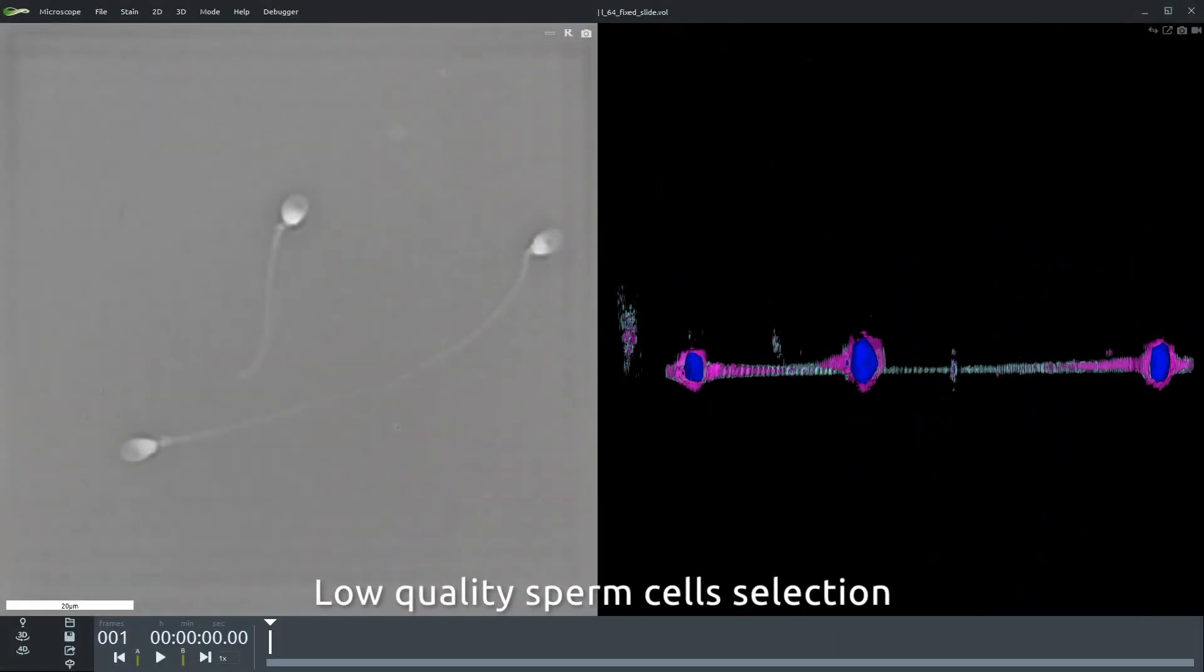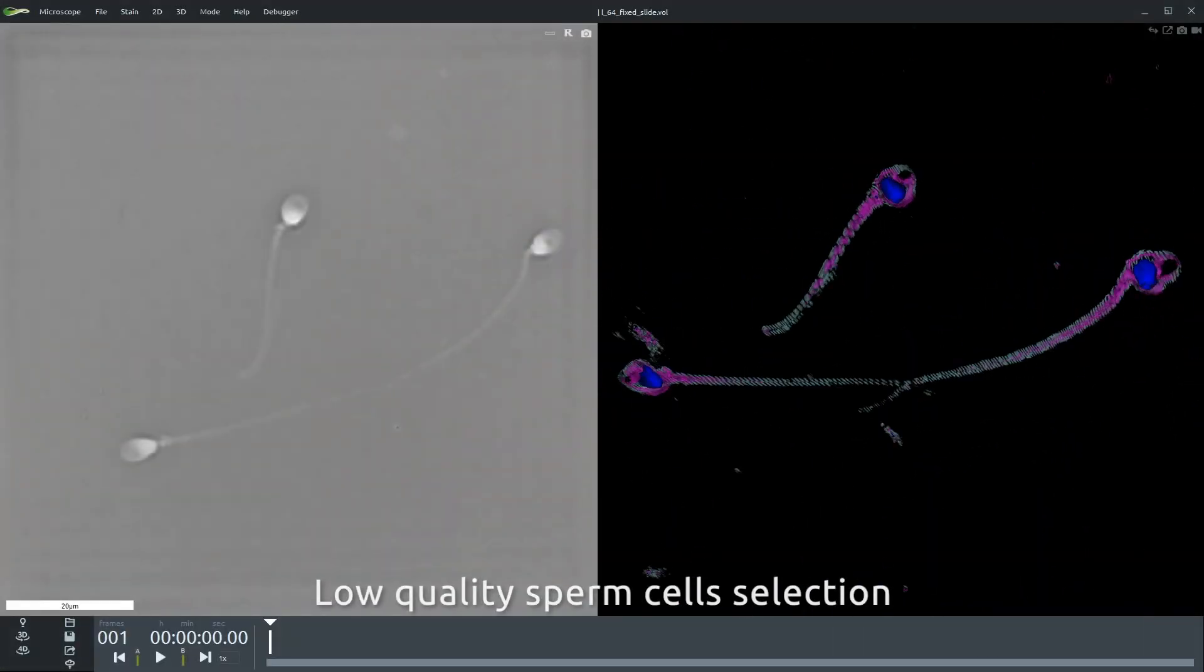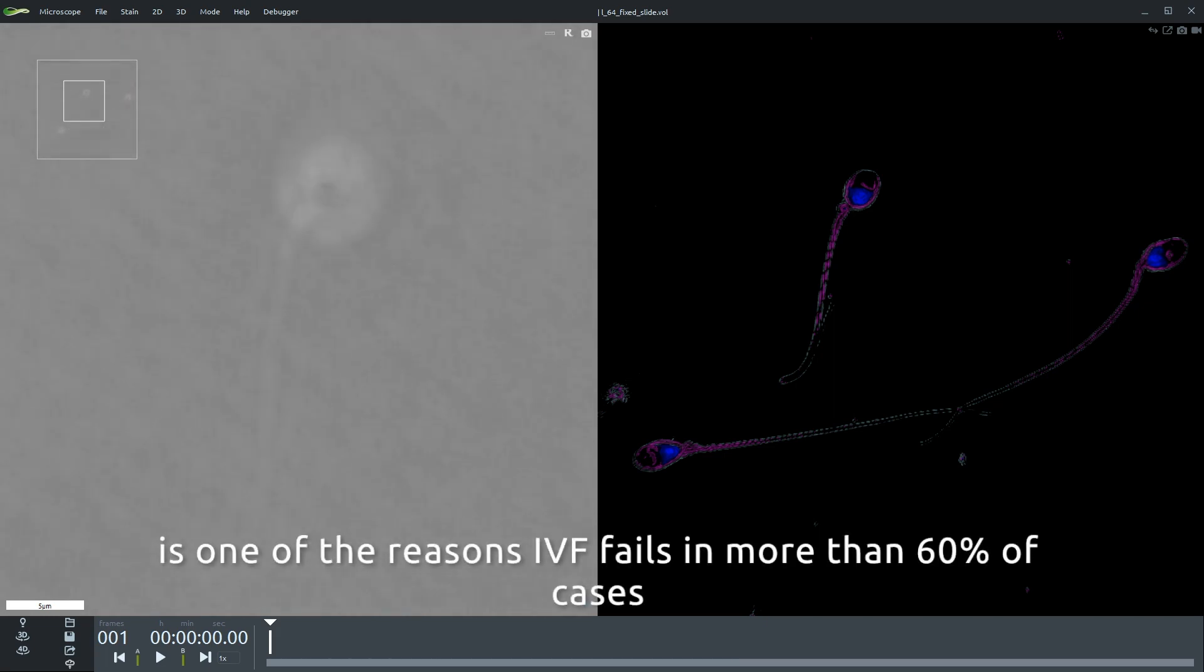Indeed, abnormal sperm is one of the main reasons in vitro fertilization fails in more than 60% of the cases.